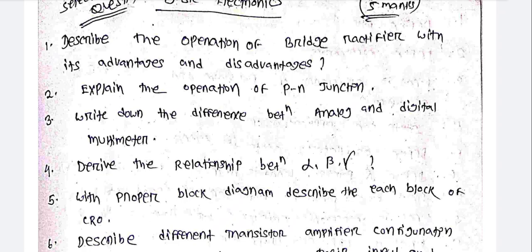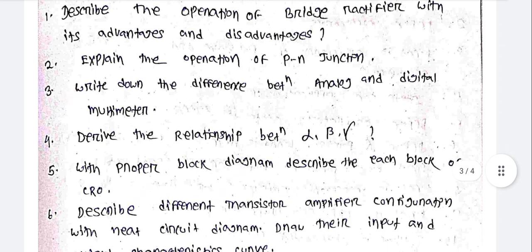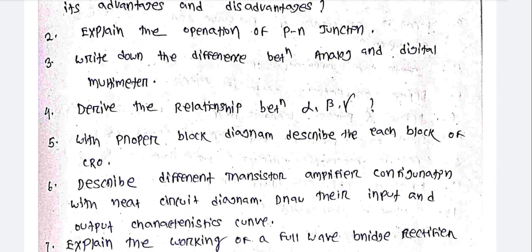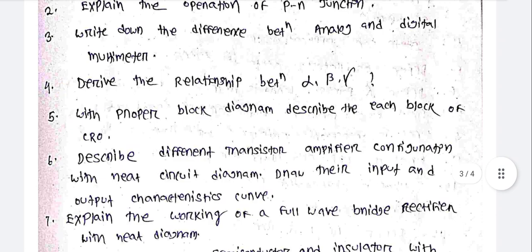Describe the operation of a bridge rectifier with its advantages and disadvantages. Explain the operation of a PN junction. Write down the difference between analog and digital multimeter. Derive the relation between Alpha, Beta, and Gamma.